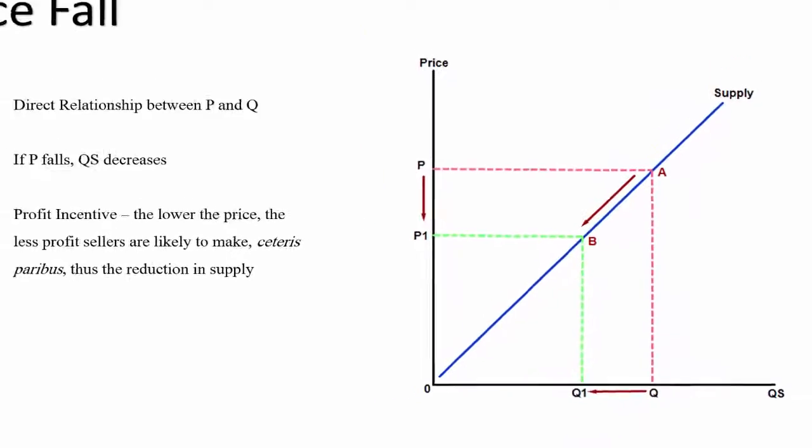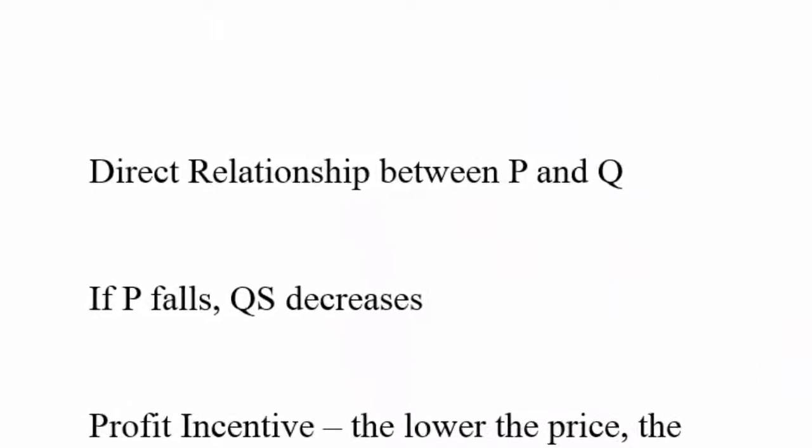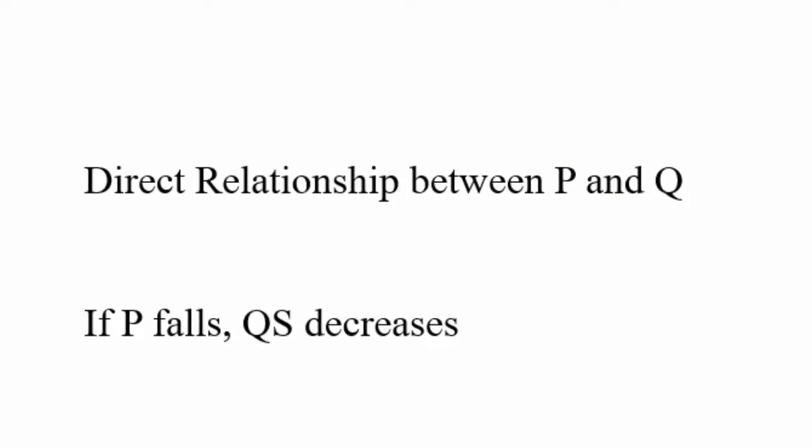There's a direct relationship between price and quantity. If the price falls so does quantity supplied, if price rises so does quantity supplied. So it's called a direct relationship.